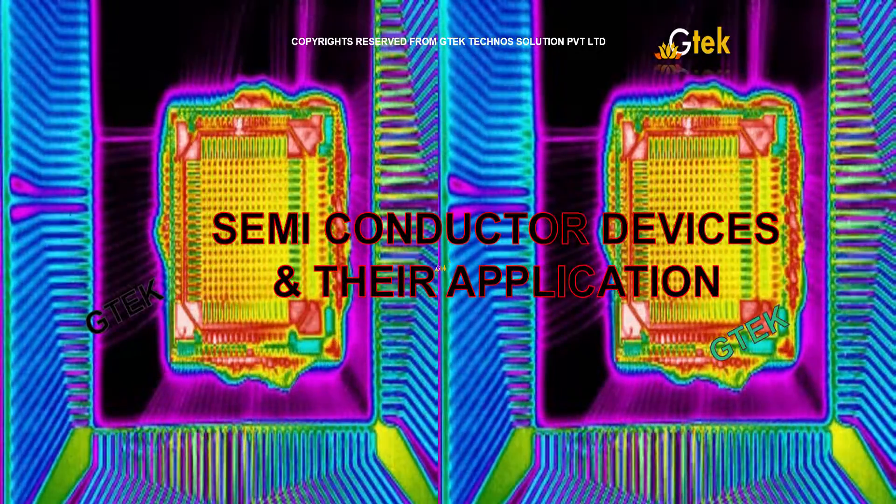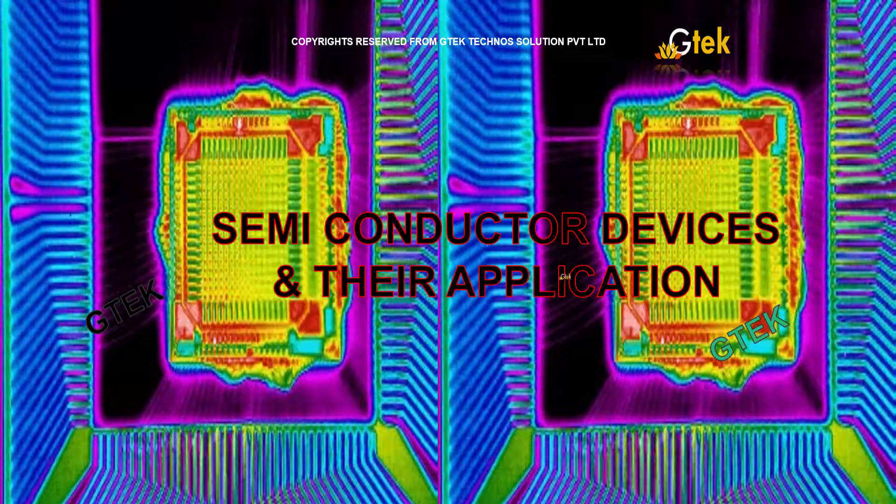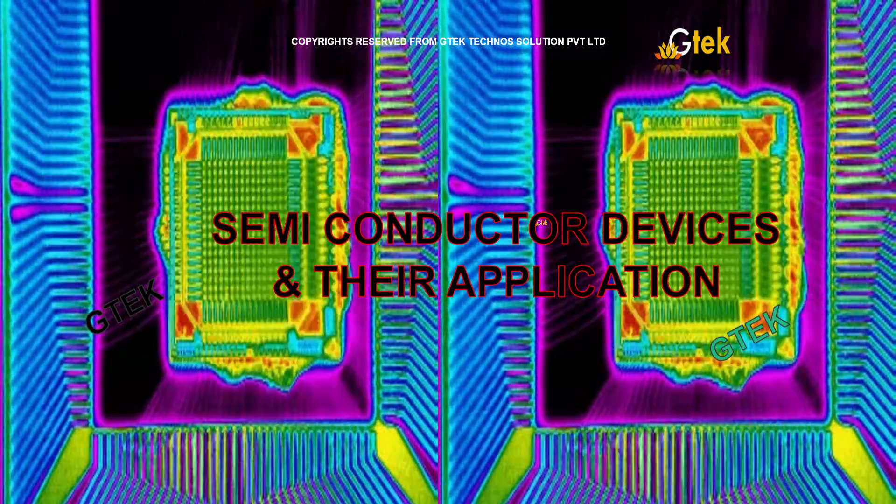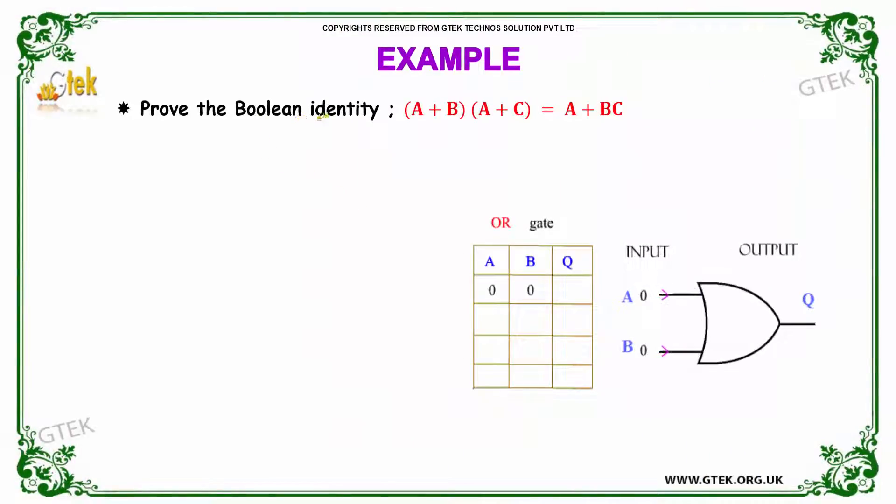This is about semiconductor devices and their applications. We are looking into the problems related to this area. Prove the Boolean identity A plus B into A plus C is equal to A plus B into C.